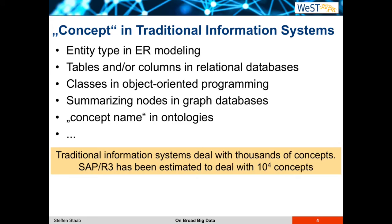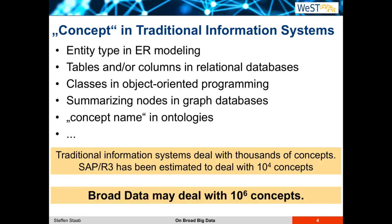In traditional information systems, you typically deal with thousands of concepts. SAP R3, for example, has been estimated to deal with 10,000 to 20,000 concepts to represent what is important to core processes of a company. But the thing about broad data is that it may have to deal with a million concepts. We see systems nowadays that have to deal with this amount of concepts, whether they occur in the form of entity types, OO classes, or tables and columns.